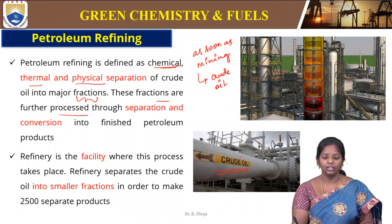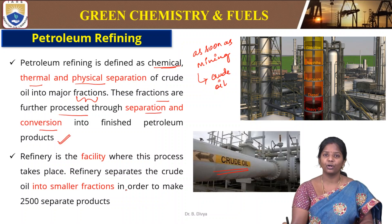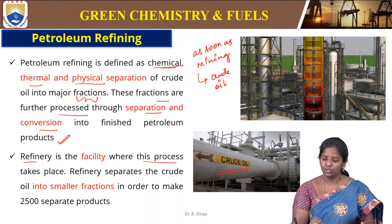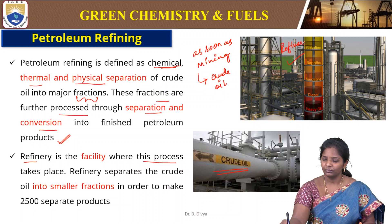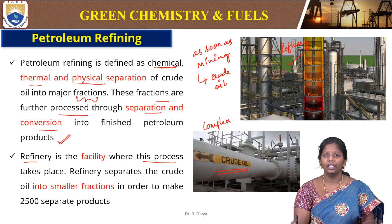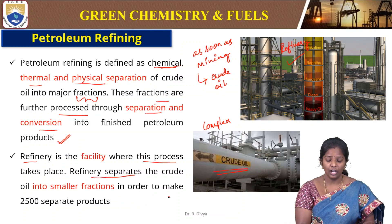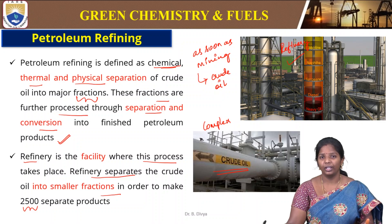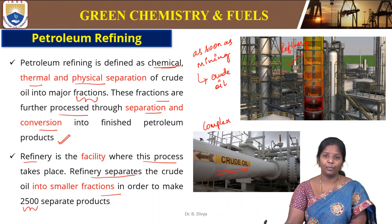These fractions are processed further through separation and conversion into finished petroleum products. Finished petroleum products are obtained only after thorough processing of the fractions obtained through refining. A refinery is the facility where this process takes place. From crude oil, we can get about 2500 separate products upon refining, separation and further processing to get appropriate products.